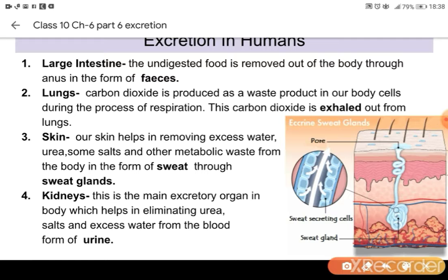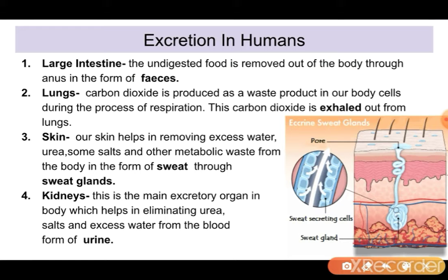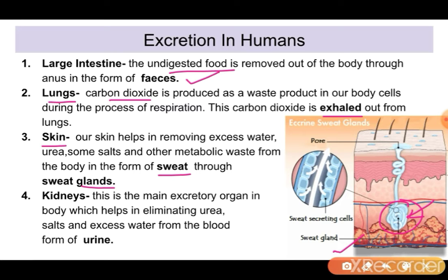What excretory organs are there in humans? First, we have the large intestine, by which we remove undigested food in the form of faeces. Lungs remove carbon dioxide during the process of exhalation. The skin has sweat glands through which it removes sweat — this is the structure of sweat glands. The sweat glands contain excess water, salts, and oil.